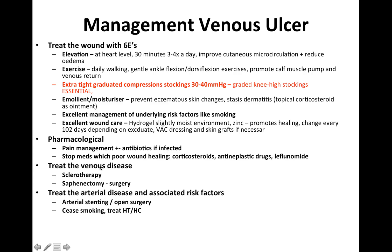For pharmacological management, provide pain relief as many ulcers are painful — unless neuropathic. Give antibiotics if infection is suspected; however, what looks like cellulitis is often not infected and treating the underlying ulcer disease can remove the erythematous changes. Try to stop medications which prevent wound healing, such as corticosteroids, chemotherapy agents, and leflunomide. You can treat venous disease using sclerotherapy, which is minimally invasive, or surgery such as saphenectomy. If underlying arterial disease exists, treat with arterial stenting, balloon angioplasty, or open surgery including endarterectomy. Cease smoking and treat hypertension and hypercholesterolaemia.